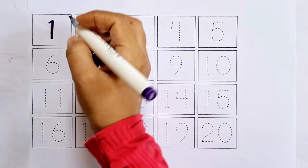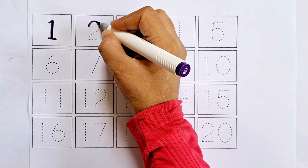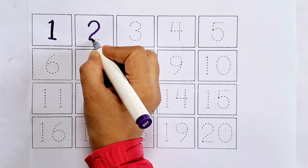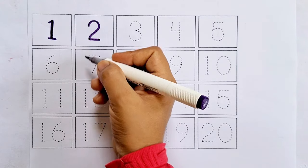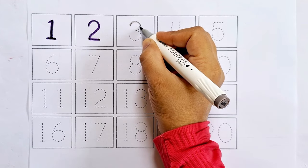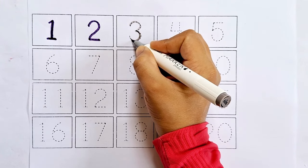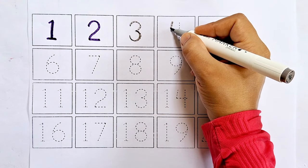One. Two. This is two. After one comes two. Three. This is three. After two comes three. Four. This is four. After three comes four.